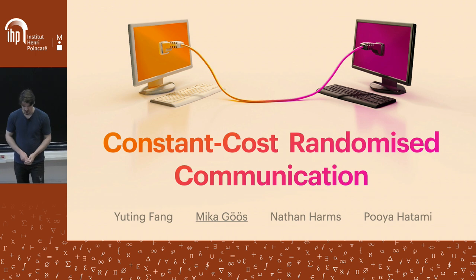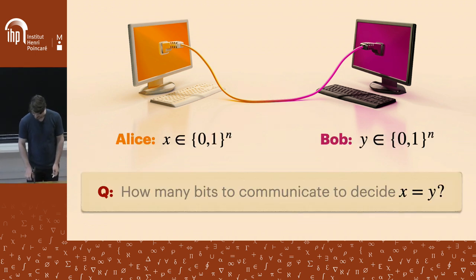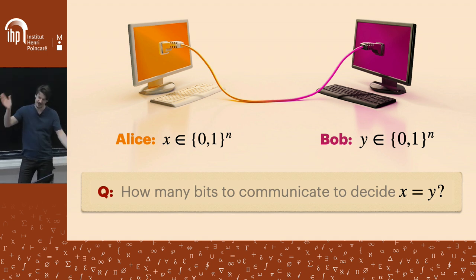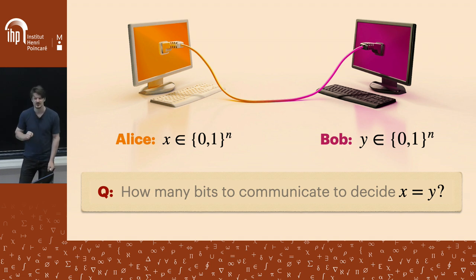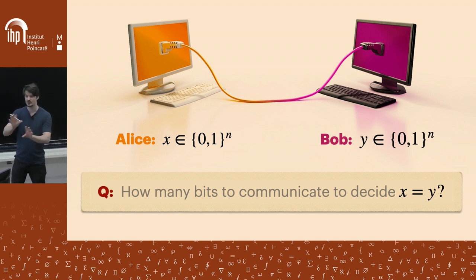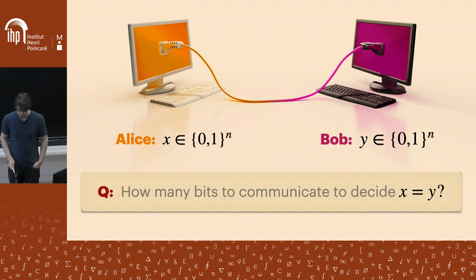I want to talk about the classic model of two-party communication complexity. To start, I want to gauge my audience — I know you have varied backgrounds — by posing one of the most basic puzzles one encounters in the two-party model. Suppose I have Alice and Bob communicating over a shared channel, and let's look at a particular problem they might want to solve.